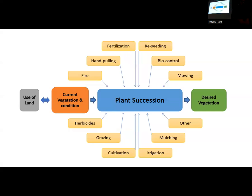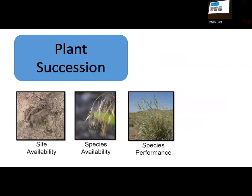If you've tried to use tools to remove a species, start thinking about those tools as a way to influence plant succession into the desired vegetation that will meet the uses you have planned for your land. Whether it's irrigation, cultivation, grazing, herbicides, biocontrol, or mowing — all of those things are going to be more effective at influencing plant succession than they are at removing individual species.